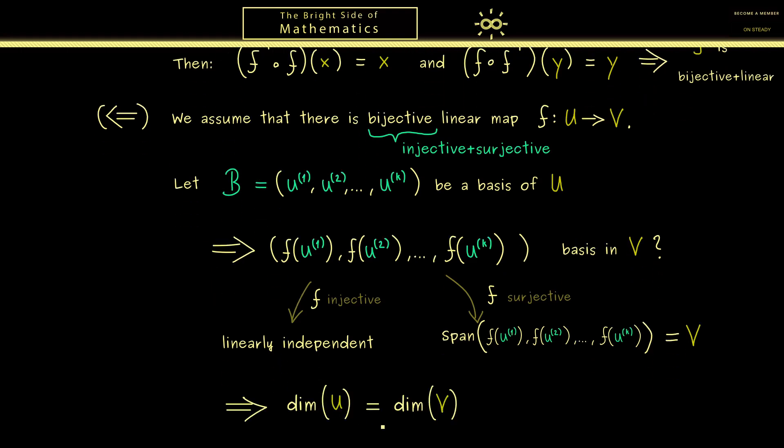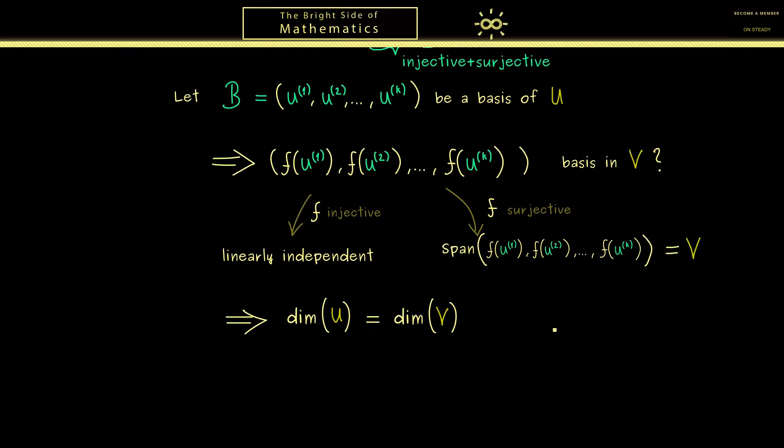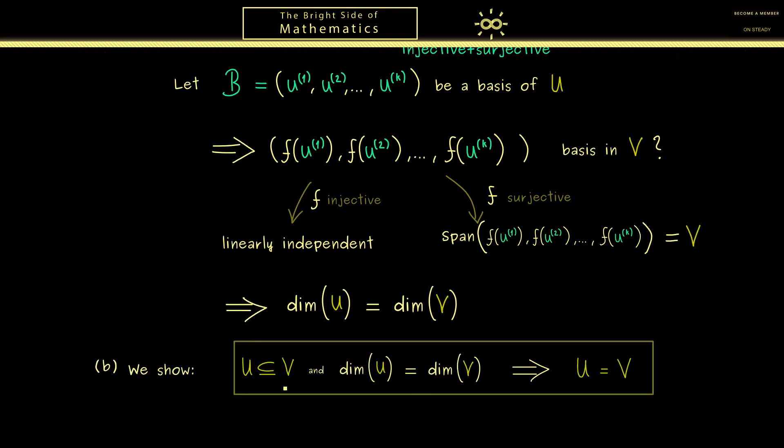So you see we have written down the proof of this direction as well, so we have proven the whole equivalence. Hence the only thing missing is now part B which is not hard at all. So there please recall what we want to show is that for subsets when the dimensions coincide the spaces already coincide. Of course this follows immediately from the linear structure, the whole space is spanned by basis vectors.